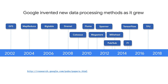Google continued to innovate to solve its big data and ML challenges, and created Colossus as a next-generation distributed data store, Spanner as a planet-scale relational database, Flume and Millwheel for data pipelines, PubSub for messaging, TensorFlow for machine learning, plus the specialized TPU hardware and AutoML.